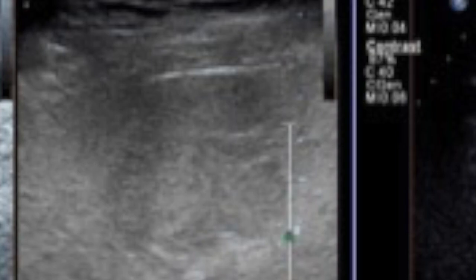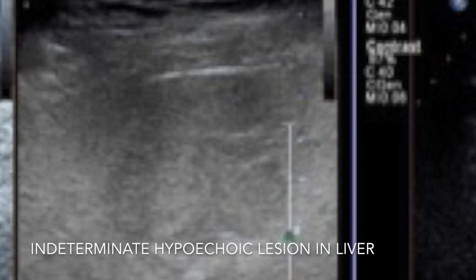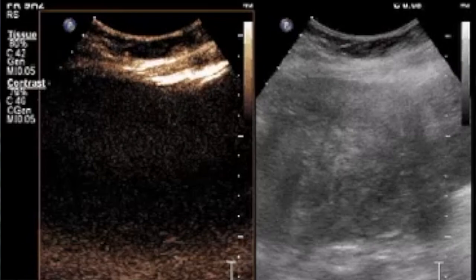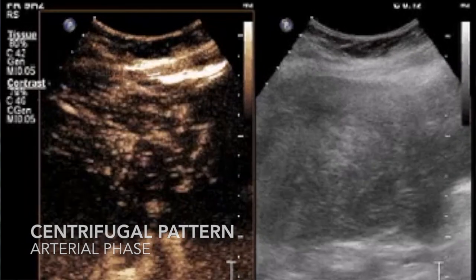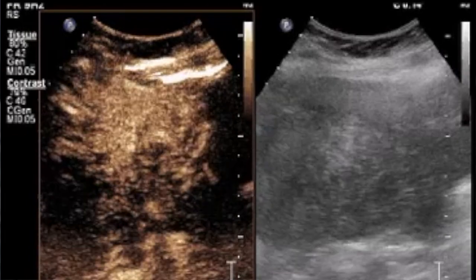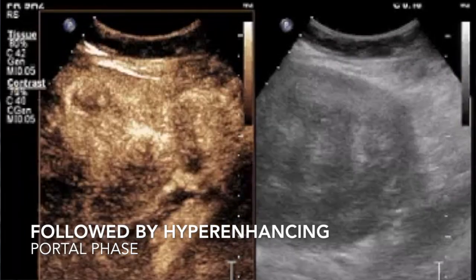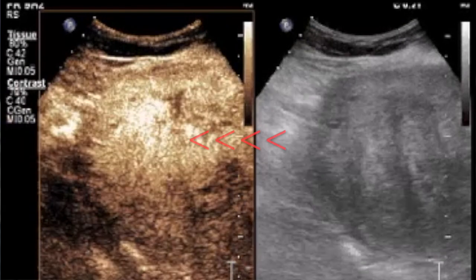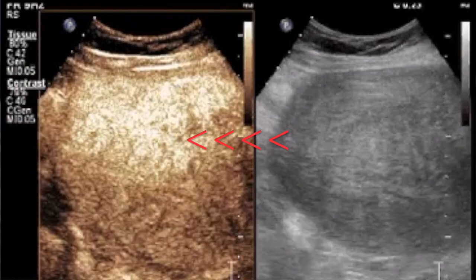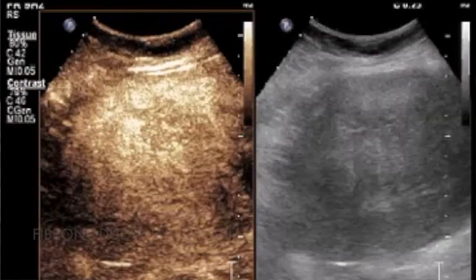Another case where we saw an ill-defined solid hypoechoic lesion in the liver. We performed the contrast study and we see that there is a centrifugal filling pattern. The lesion appears a little hyper-enhancing on the portal venous phases but iso-enhancing on the delayed phases, and importantly there is a hypo-enhancing scar which can be identified. So this was actually an FNH.